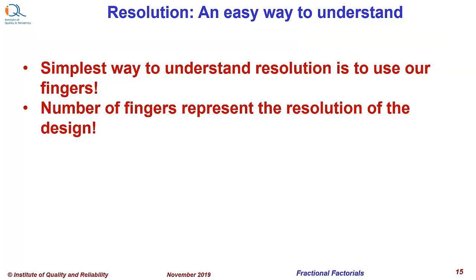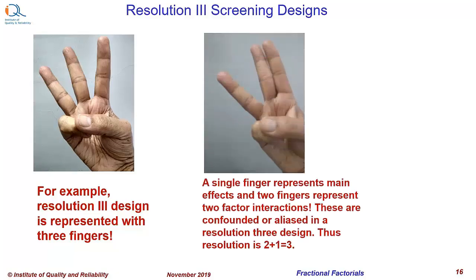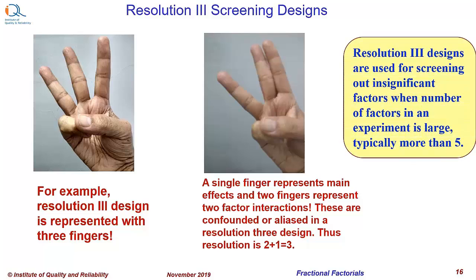The simplest way to understand resolution is to use our fingers. The number of fingers represents the resolution of the design. For example, resolution 3 design is represented with three fingers. A single finger represents main effects and two fingers represent two-factor interactions. These are confounded or aliased in a resolution 3 design. Thus, resolution is 2 plus 1, that is equal to 3. Resolution 3 designs are used for screening out insignificant factors when the number of factors in an experiment is large, typically more than 5.